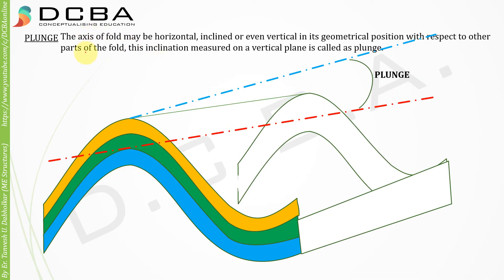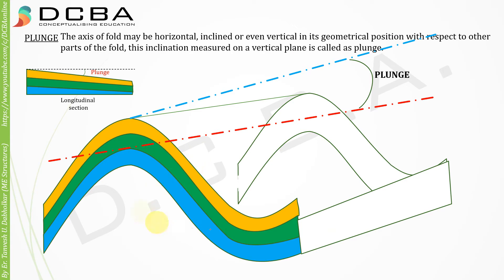Next is what we call the plunge of the fold. The axis of the fold may be horizontal, inclined, or even vertical in its geometrical position with respect to other parts of the fold. This inclination, measured on a vertical plane, is called the plunge. So it is not necessary that the axis of the fold will always be horizontal — it can be inclined as well. Whatever angle the axis makes with the horizontal, as seen in longitudinal section, is called the plunge.